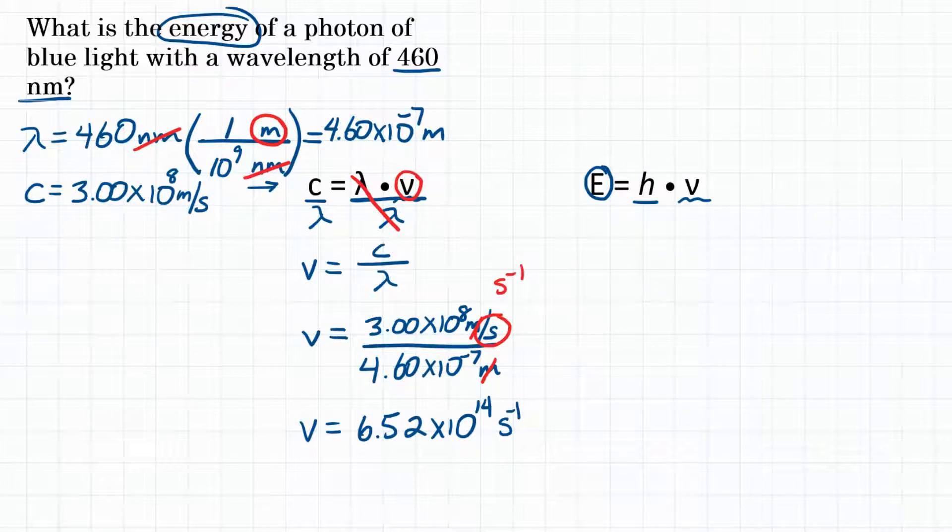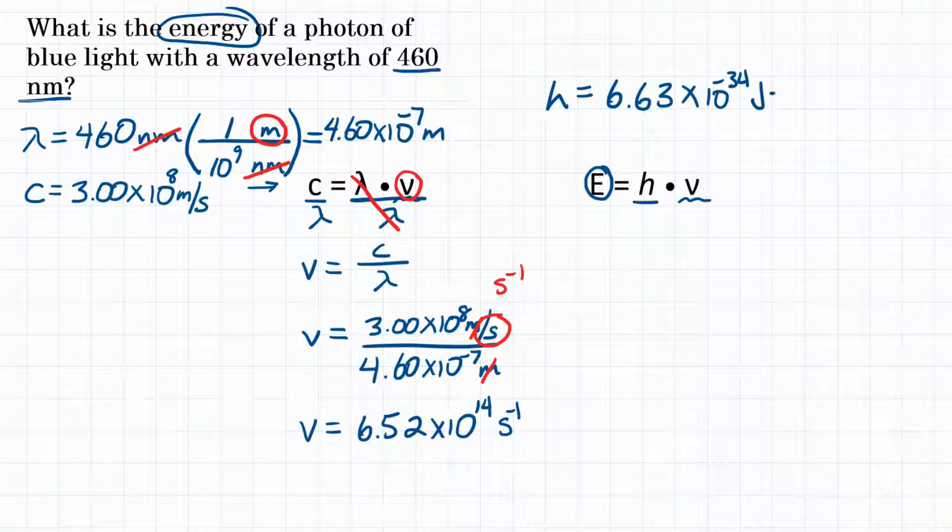Okay, now on to the second equation, where we are going to need h, which is Planck's constant, and it being a constant means that we know it, and that value is 6.63 times 10 to the negative 34th, and the units are joules times seconds.